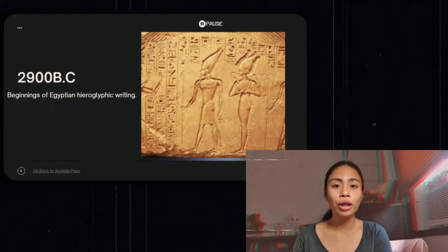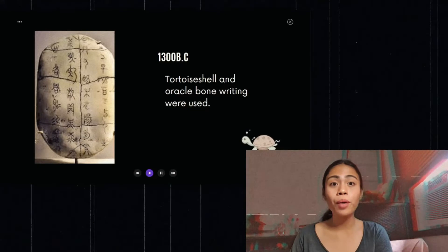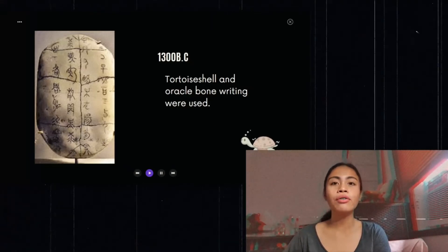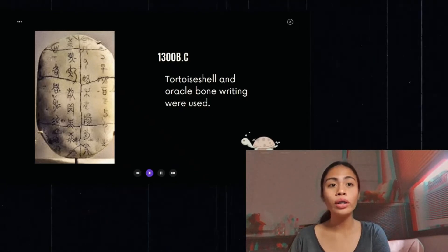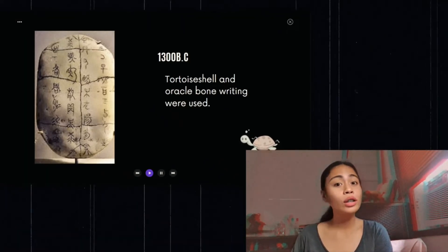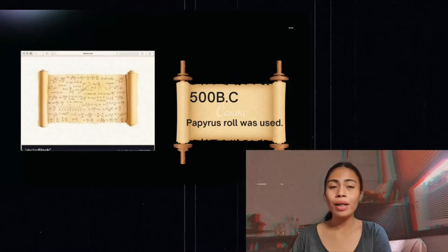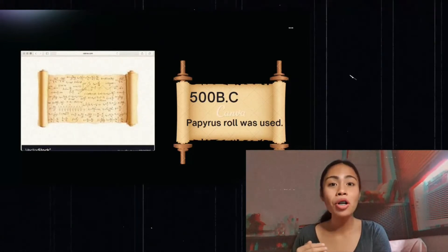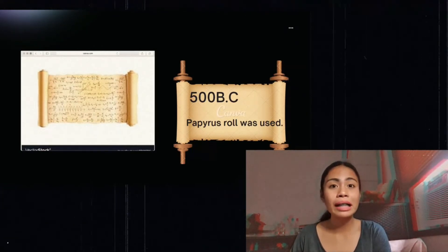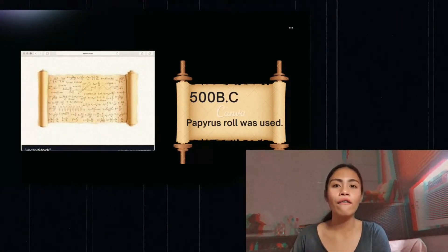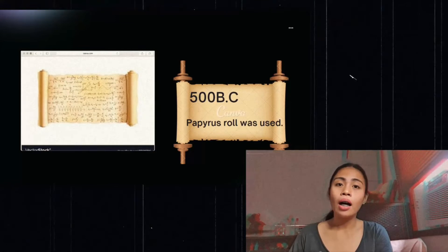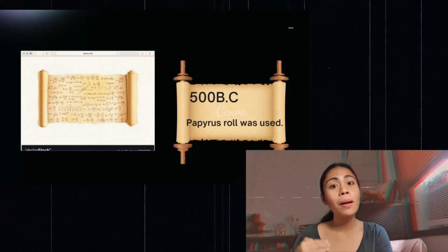In 1300 BC, Tortoise Shell and Oracle Bone Writing were used. These are the shoulder blades of oxen or plastrons of turtles used in divination ceremonies in ancient China, called Pyromancy. In 500 BC, the Papyrus Roll was used. The Papyrus Rolls of ancient Egypt are more nearly the direct ancestor of today's modern book. Papyrus, as a writing material, resembles paper. It was made from a reedy plant that flourishes in the Nile Valley, producing cream-colored papery sheets.